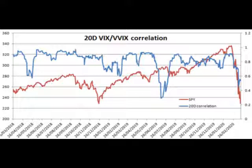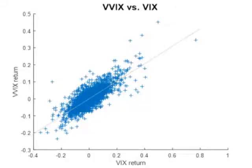The median value of correlation is 0.807 and the 25th percentile is 0.66. A figure on our website presents the rolling 20-day VIX/VVIX correlation for the last two years. We also superimposed SPY on the chart. We observed that the correlation is usually high, but there are periods where it decreases significantly. The current period is one of those.